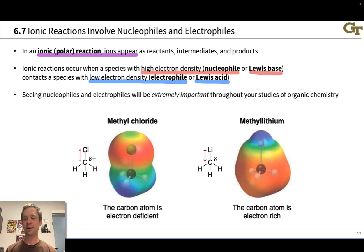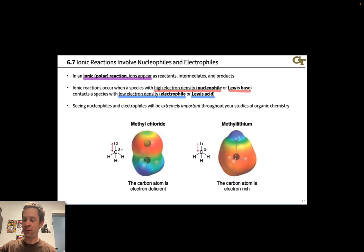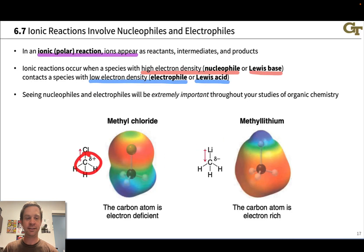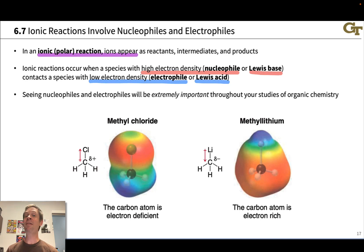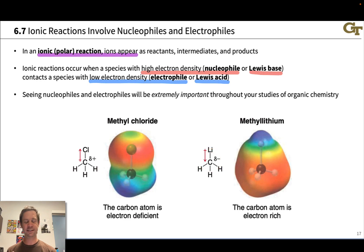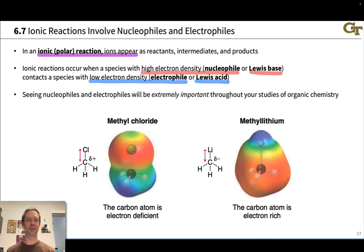Methyl chloride is a classic example of an organic electrophile at carbon—a species with partial positive charge on a carbon atom—and we can see that in the electron density map by the blue-green color around that carbon. Methylithium, on the other hand, is an example of a classic carbon-centered nucleophile with negative charge at the carbon, visible as red highlighting around that carbon in the electron density map.